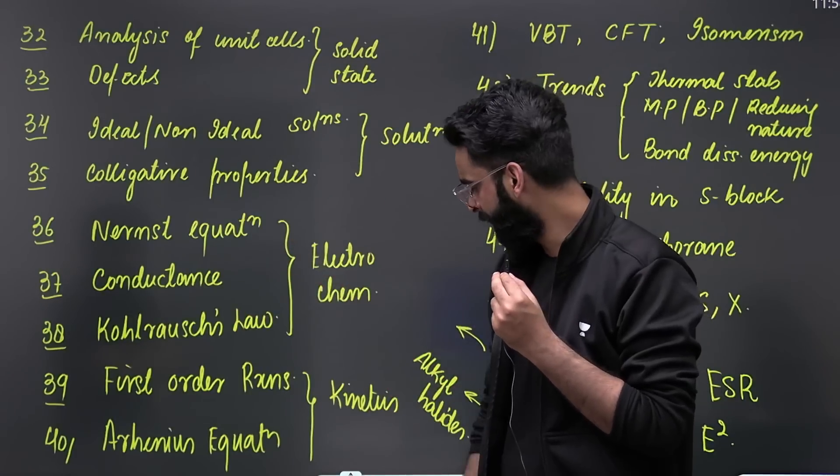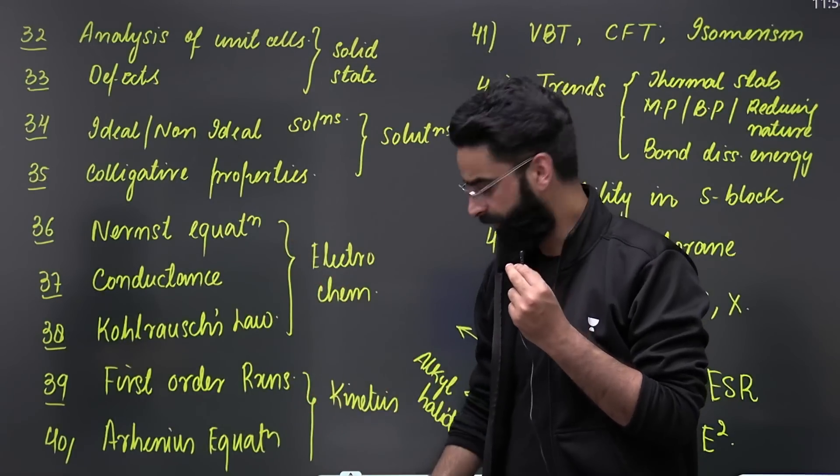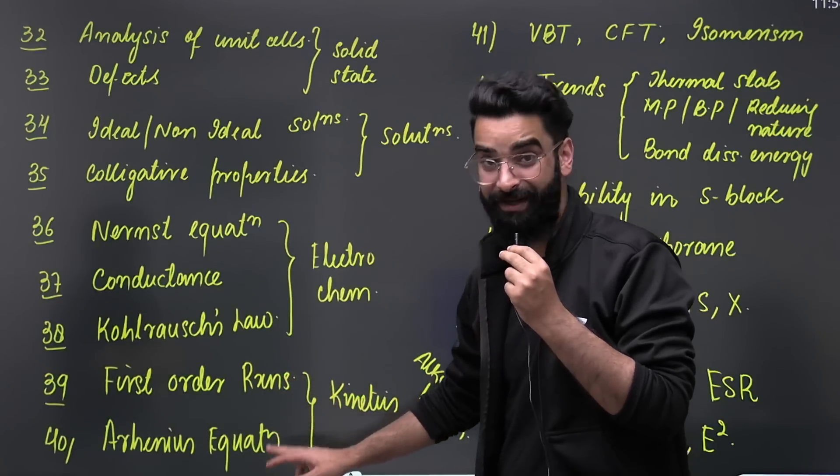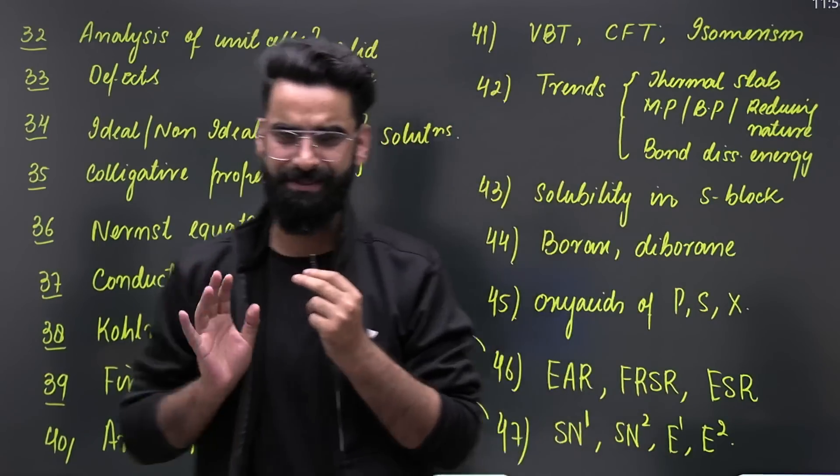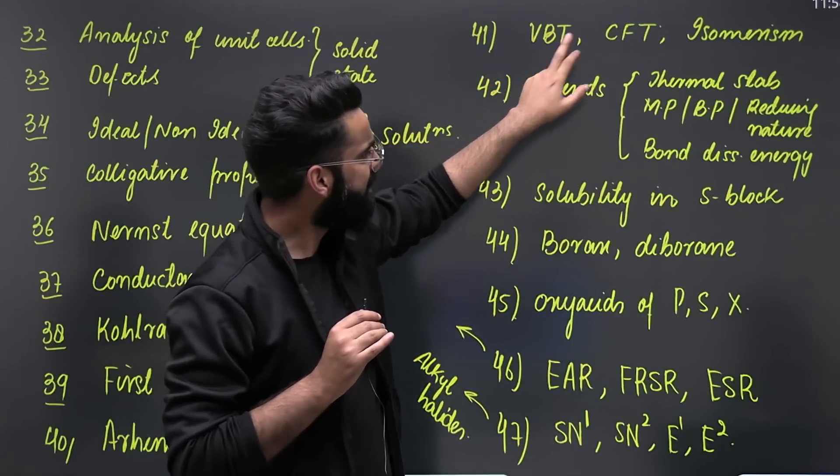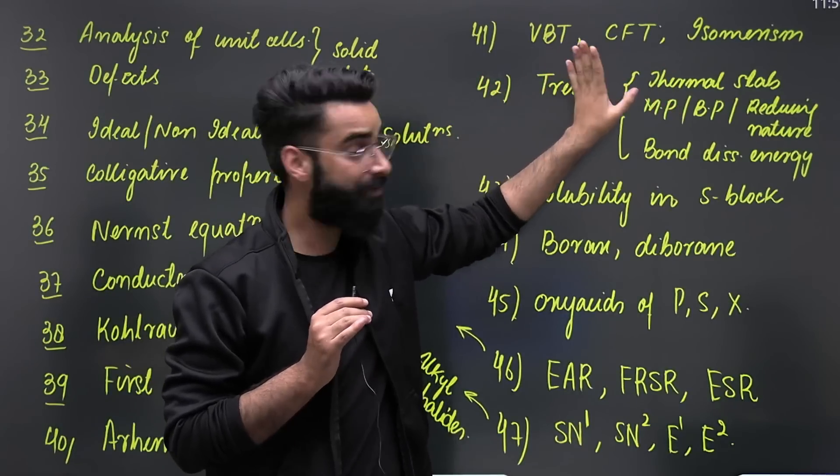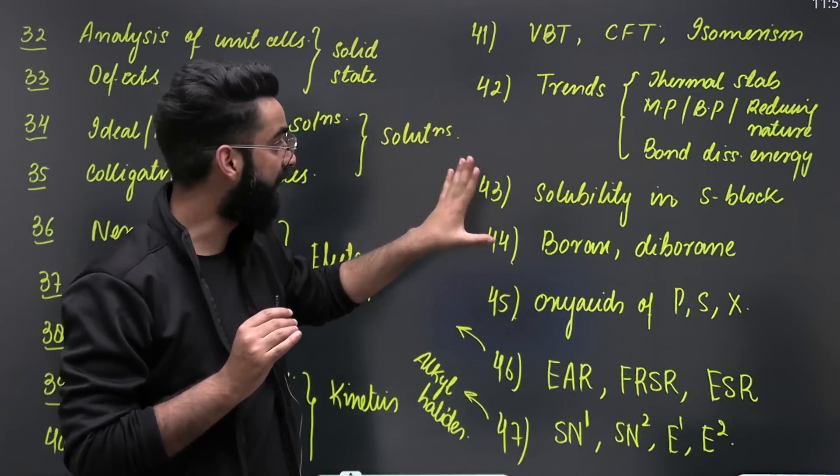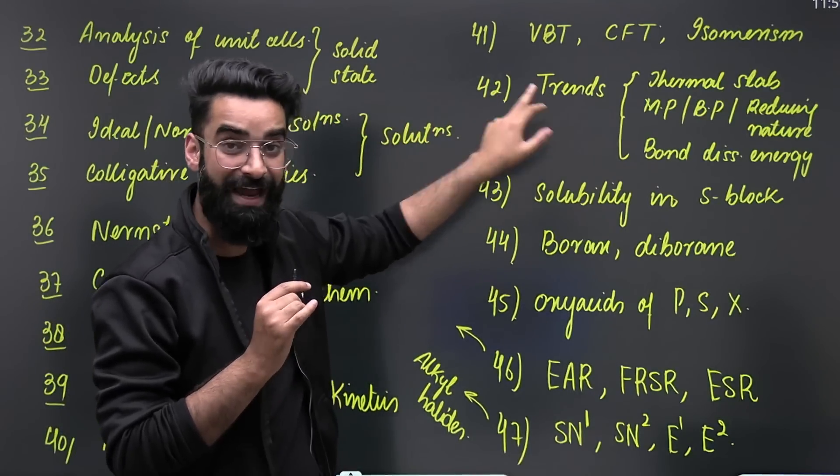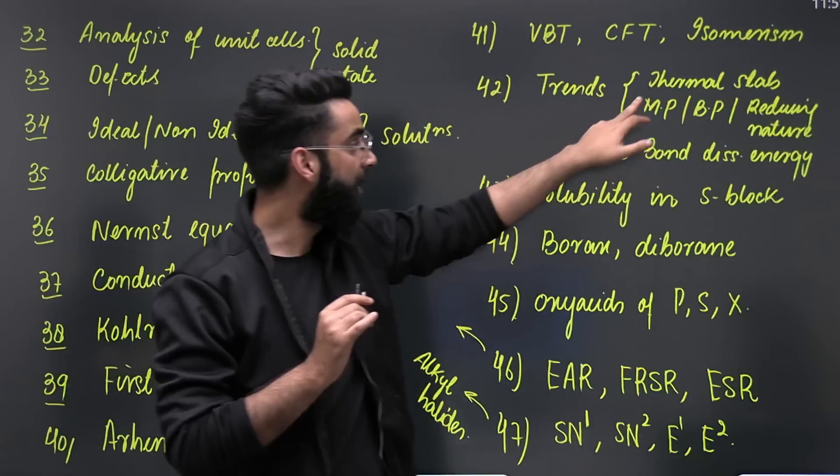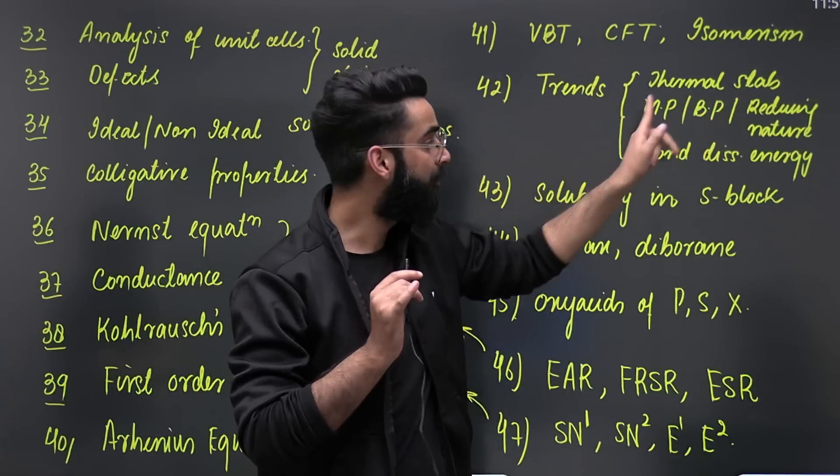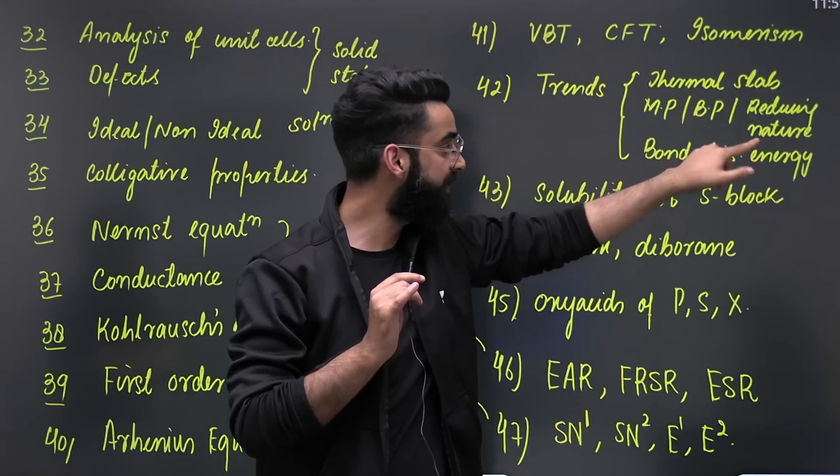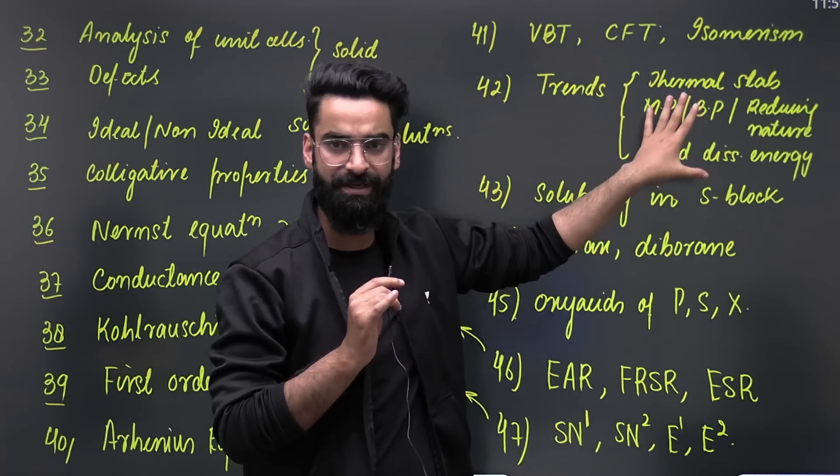From the kinetics point of view, you have got first order reactions and Arrhenius equation - two important topics. Then you have got VBT, CFT, and isomerism in coordination chemistry. When it comes to your p-block elements, you have to go for the trends. In the trends, particularly look at the thermal stability trends, melting point, boiling point, reducing nature, and bond dissociation energy trends. These are the trends which you'll focus on more as far as your p-block elements is concerned.